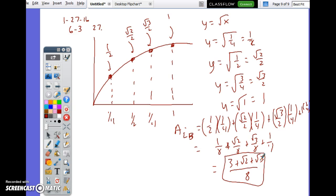Oh, I did that wrong. That's right-handed. That's right-bound. Area left-bound would be zero times one-fourth plus one-half times one-fourth plus root two over two times one-fourth plus root three over two times one-fourth. So that would be one plus root two plus root three over eight.